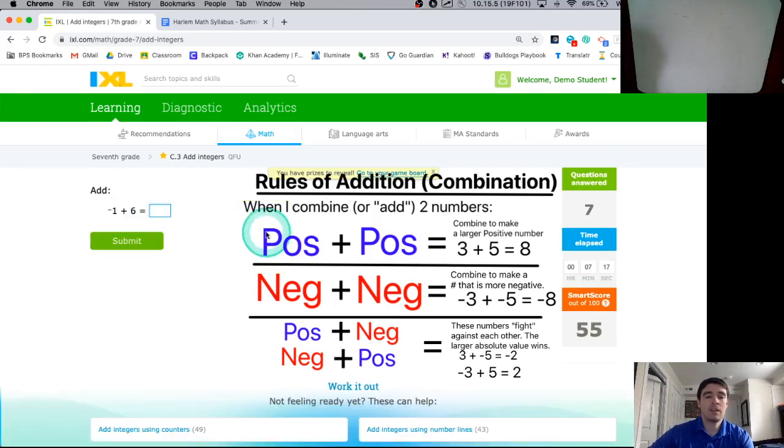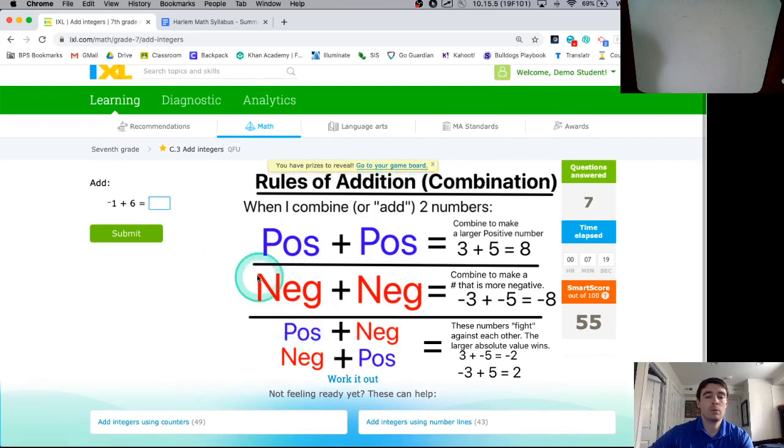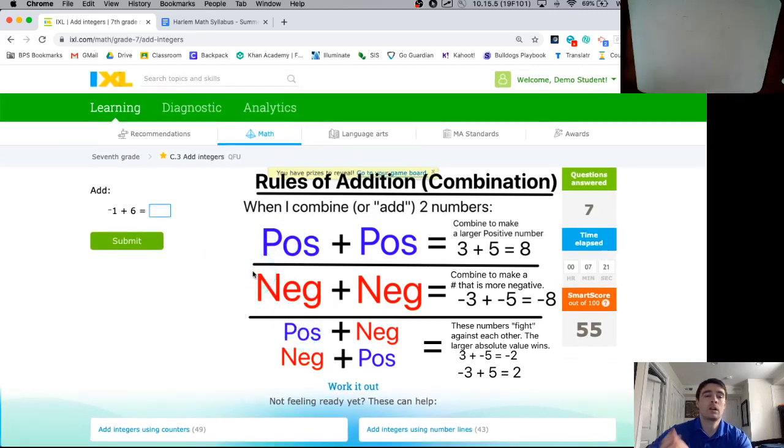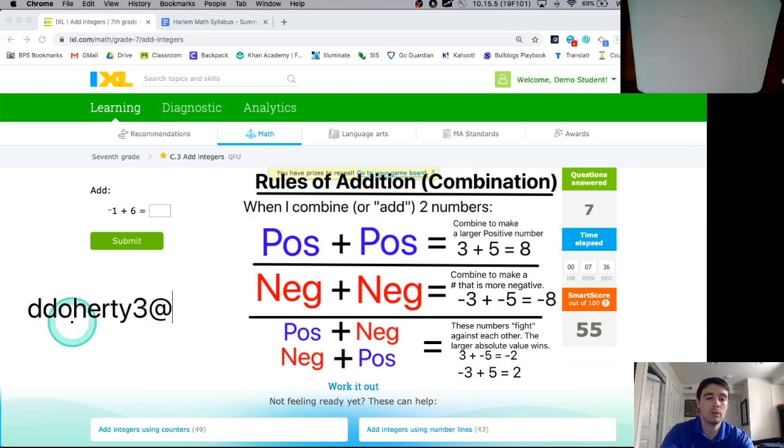I'm not going to keep going on this. I think this is application of these three rules. If you are stuck, if you're struggling, two pieces of advice. Number 1, you could use number lines. I didn't show that here. Number lines are one way to understand this. And number 2, if you need help and you want one-on-one support with this, as always, please feel free to email me. My email address is ddoherty3, as you can see coming up on the screen, at bostonpublicschools.org.